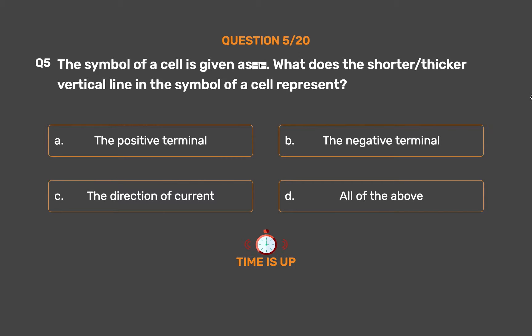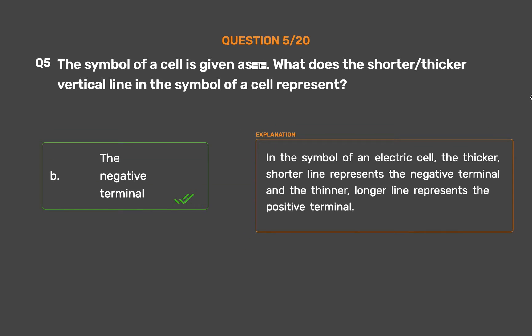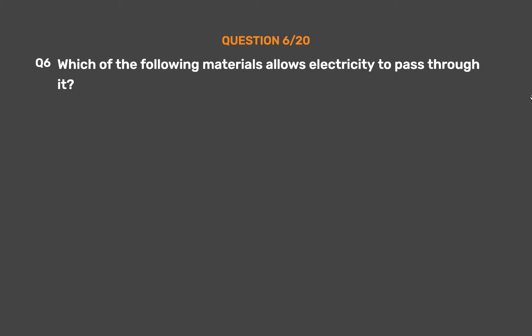The correct answer is Option B: The negative terminal. In the symbol of an electric cell, the thicker, shorter line represents the negative terminal and the thinner, longer line represents the positive terminal.